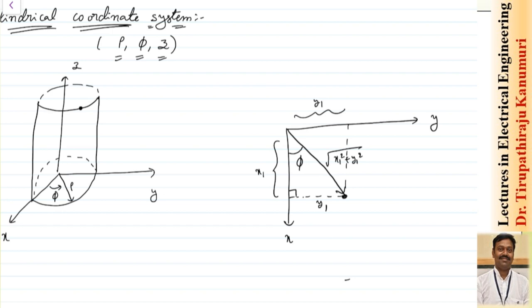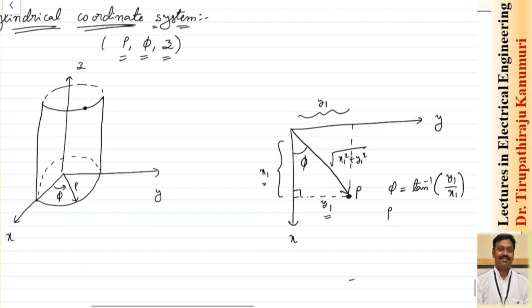The angle with respect to the x-axis, let us call it phi. From this, phi equals tan⁻¹(y1/x1). The radius or hypotenuse we represent with the term rho, so it does not conflict with other coordinate systems. Therefore, rho = √(x1² + y1²), or simply √(x² + y²). So if you have rectangular coordinates x and y, you can calculate the radius rho = √(x² + y²).